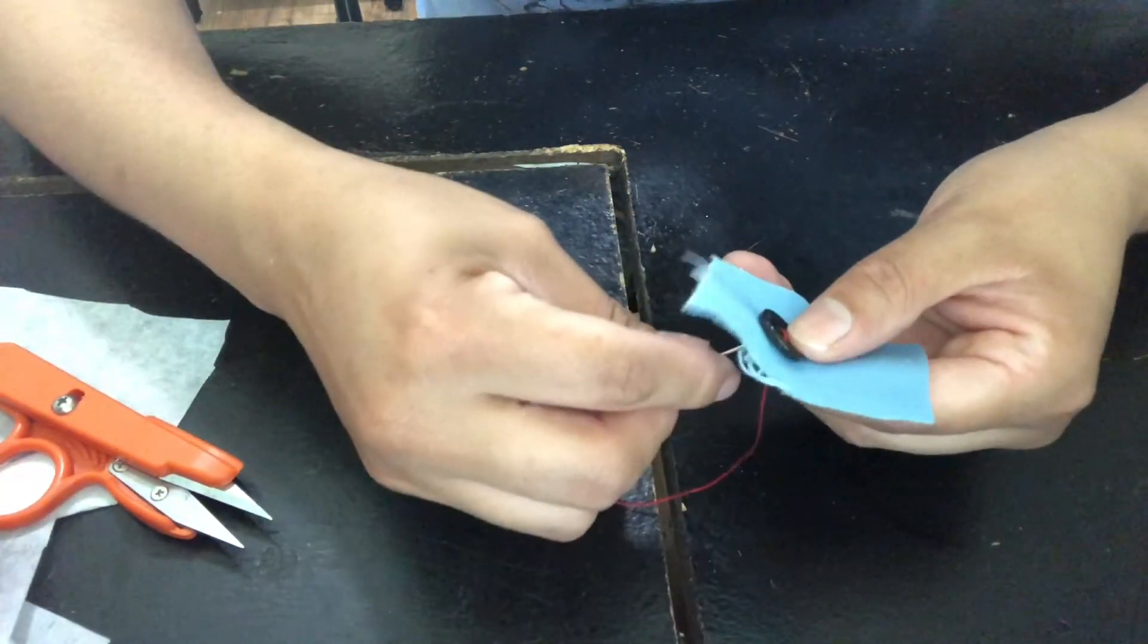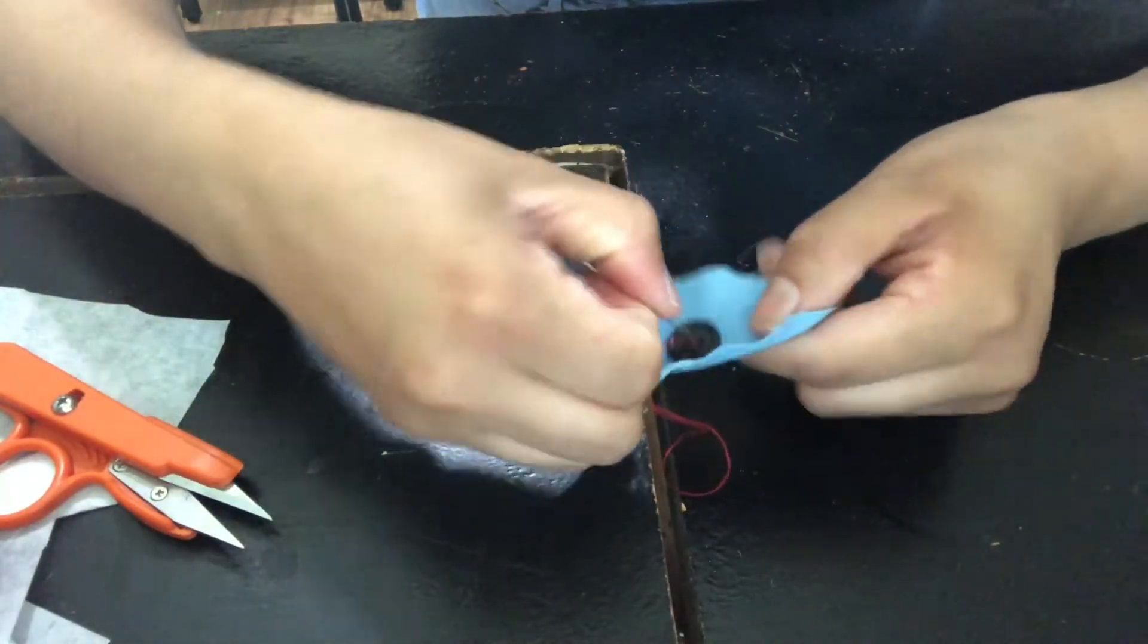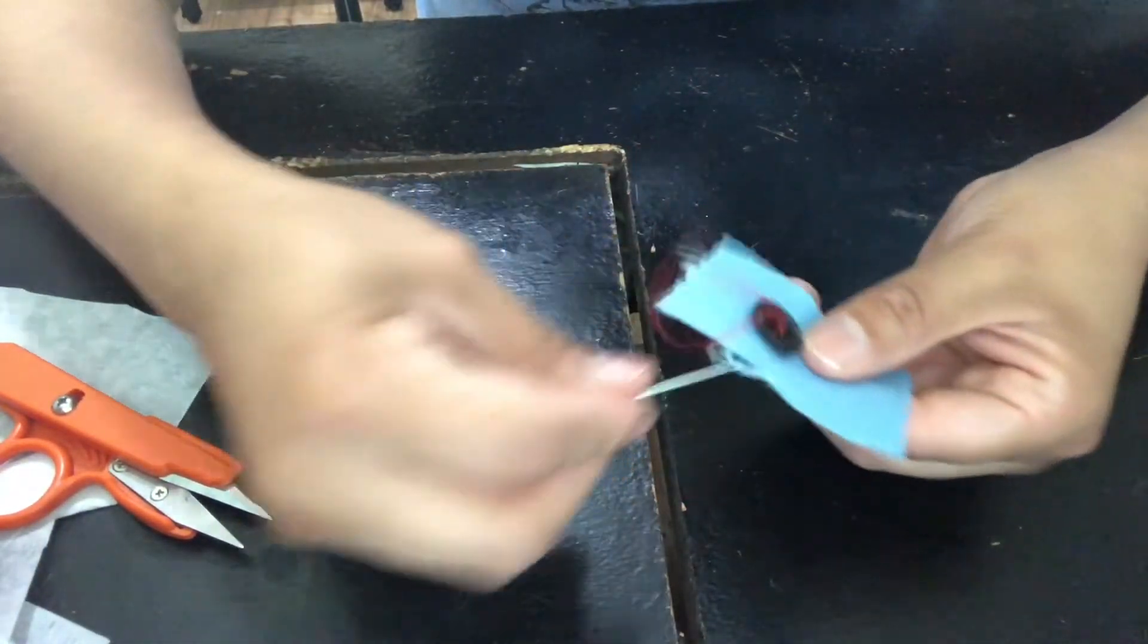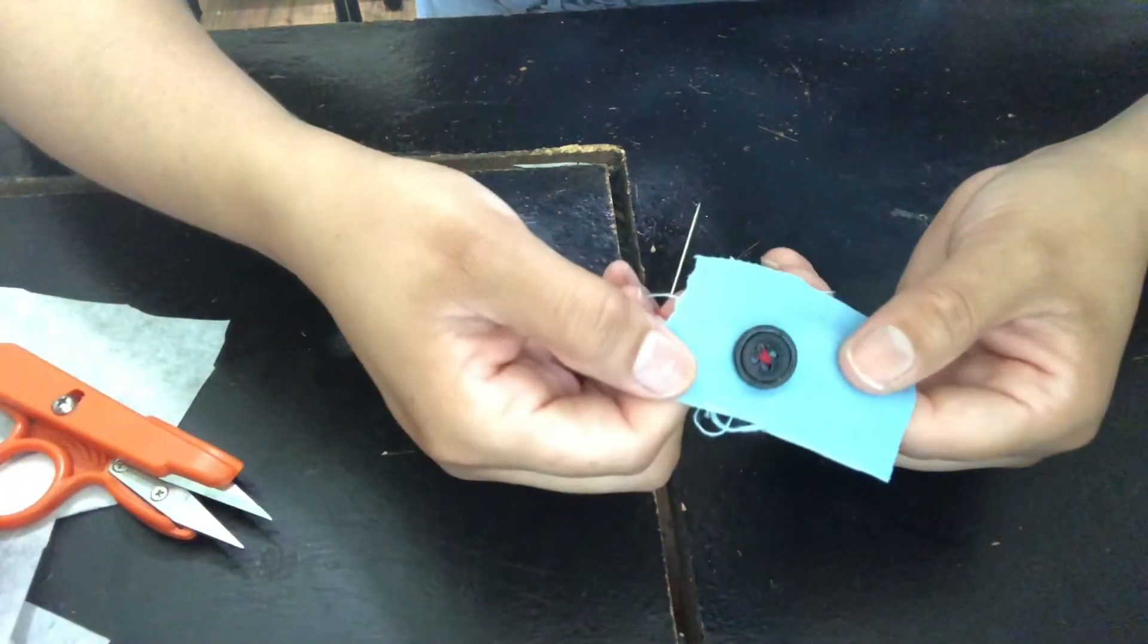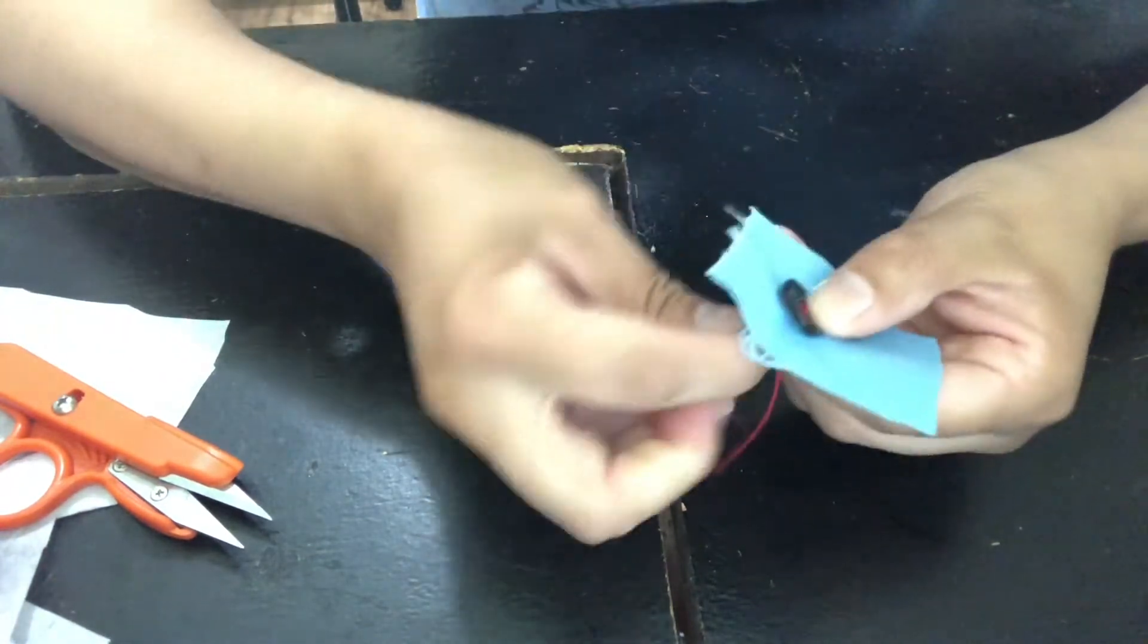Then I'm going to come in through the opposite side right here so that way you form an X, like so. And you're going to do that again just to secure that button in there.